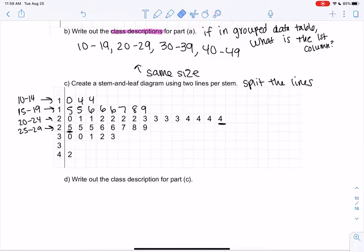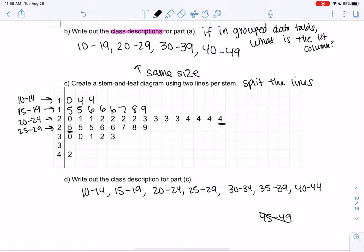So the class descriptions are different here. Rather than 10 through 19, we cut it into half. So 10 through 14 and 15 through 19. 20 through 24, 25 through 29. So if I put this in a grouped data table, this is what that first column would be. The next one would be 30 through 34, and then 35 through 39. And then we stopped at 40 through 44. We don't need 45 through 49 because it's empty. We never start or end with an empty class.